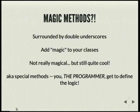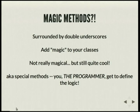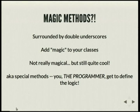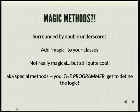So what are magic methods? They're usually surrounded by double underscores on both sides, and they're supposed to add a bit of magic into your classes. They're not really magical, but they are still quite cool. They're also sometimes called special methods, because they allow you, the programmer, to add your own logic to how things work.